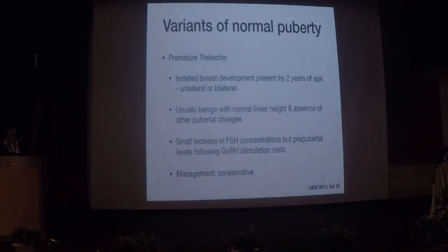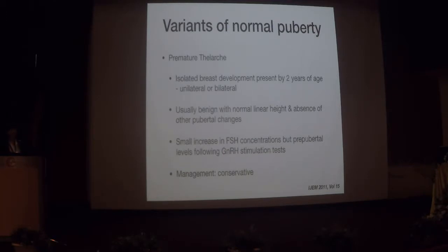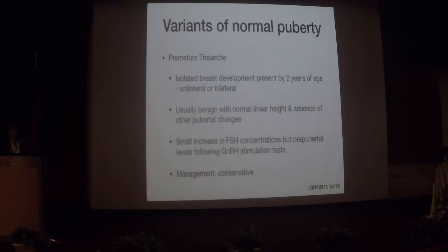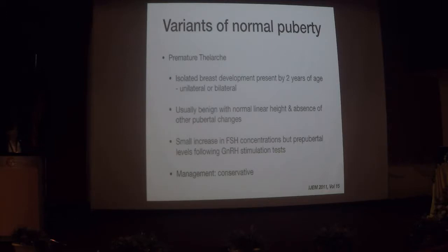Variants of normal puberty include premature telarchy — isolated breast development present by 2 years old, either unilateral or bilateral. This is typically benign: the child does not grow faster, grows at a normal rate, and there is an absence of other pubertal changes. Blood tests show a small increase in FSH but pre-pubertal LH levels on a GnRH stimulation test. Management is observation and reassurance, with follow-up every 6 months.